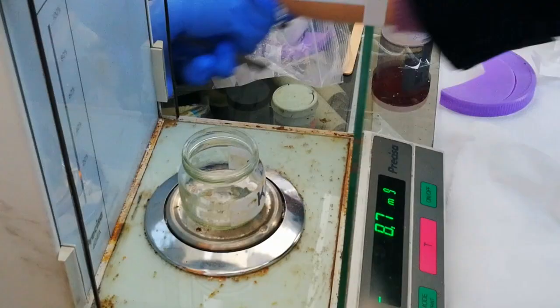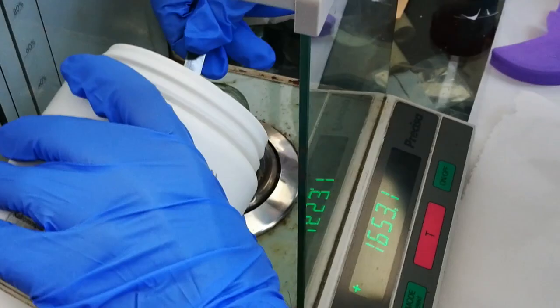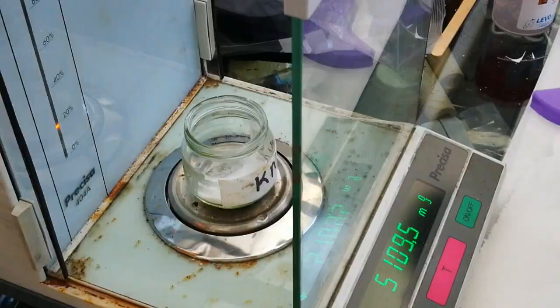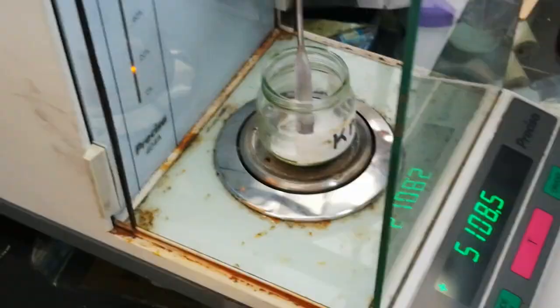After calculating how much material we need, the material is being measured using a high precision scale. We made sure that the scale is set to zero before pouring the material, and the procedure was repeated for the other materials.